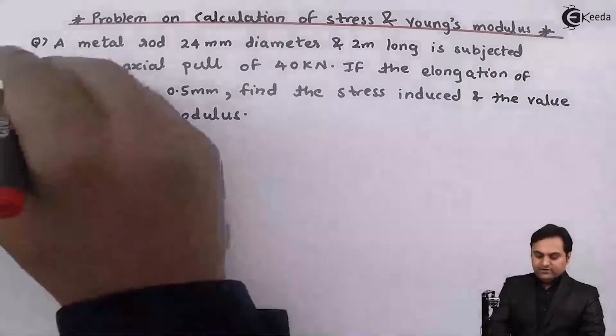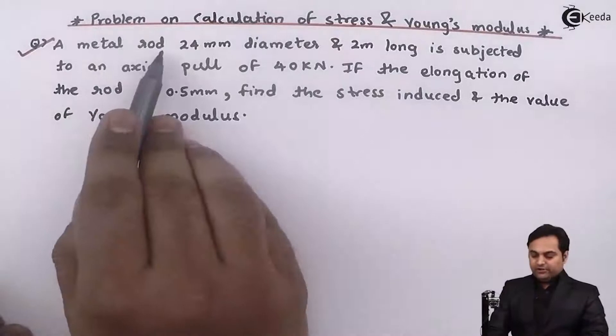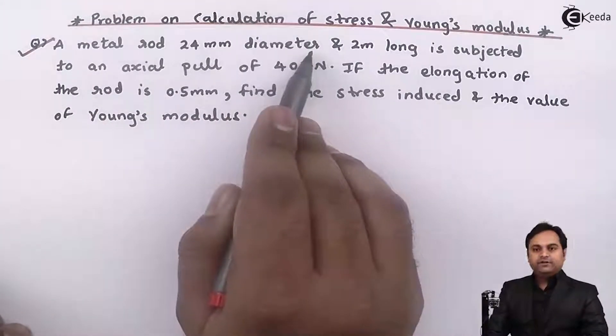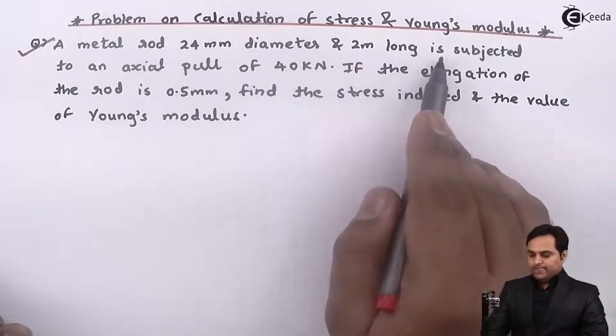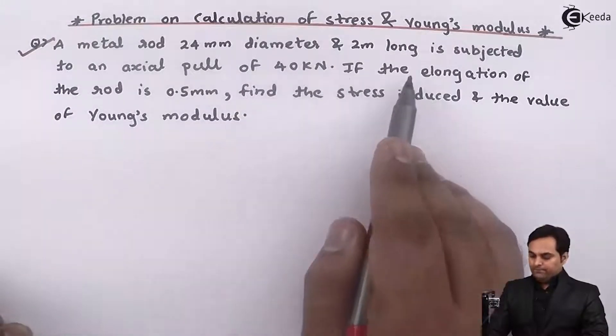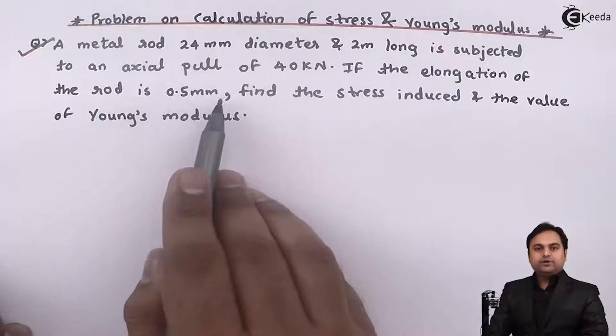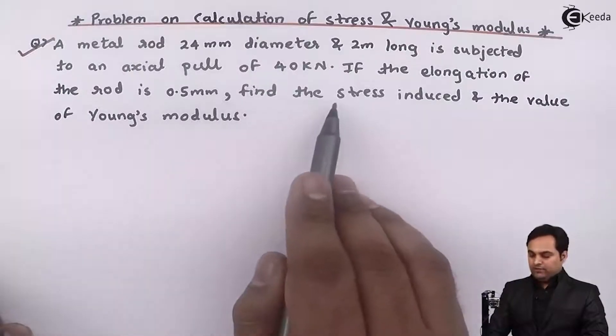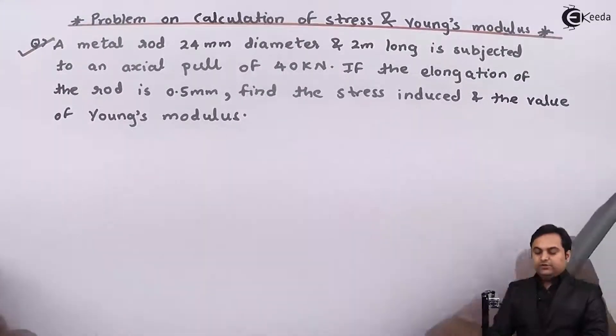Let's have a question here. A metal rod 24 mm diameter and 2 meter long is subjected to an axial pull of 40 kilonewton. If the elongation of the rod is 0.5 mm, find the stress induced and the value of Young's modulus.